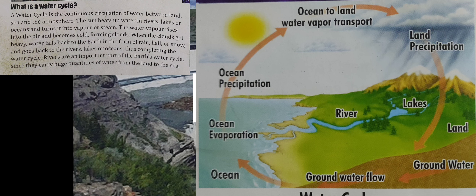The water vaporizes into the air and becomes cold, forming clouds. When the clouds get heavy, water falls back to the earth in the form of rain, hail, or snow, and goes back to the rivers, lakes, or streams, thus completing the water cycle.